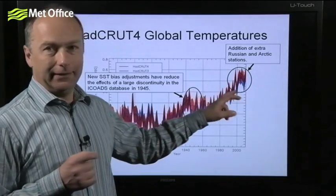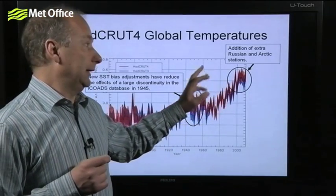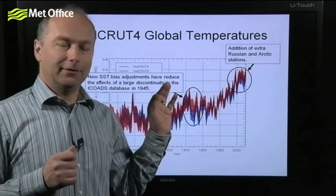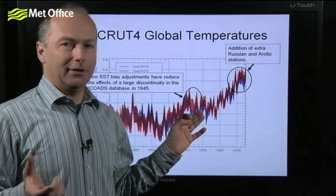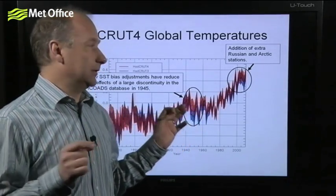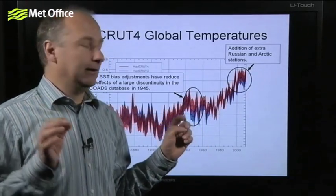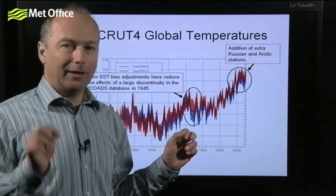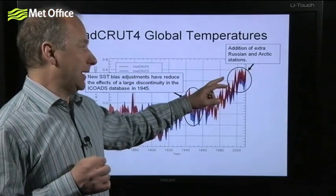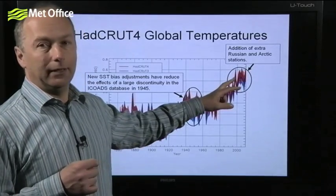In more recent years, we have now been able to obtain new data for the Russian region and the Arctic region — a part of the Earth that is relatively poorly observed with relatively few weather stations. With these new weather stations, we're better able to measure what is happening at the higher latitudes. The high latitudes of the Northern Hemisphere have been warming more rapidly than the global average, and as a result, the HadCRUT4 temperatures in recent years are slightly warmer than in HadCRUT3.